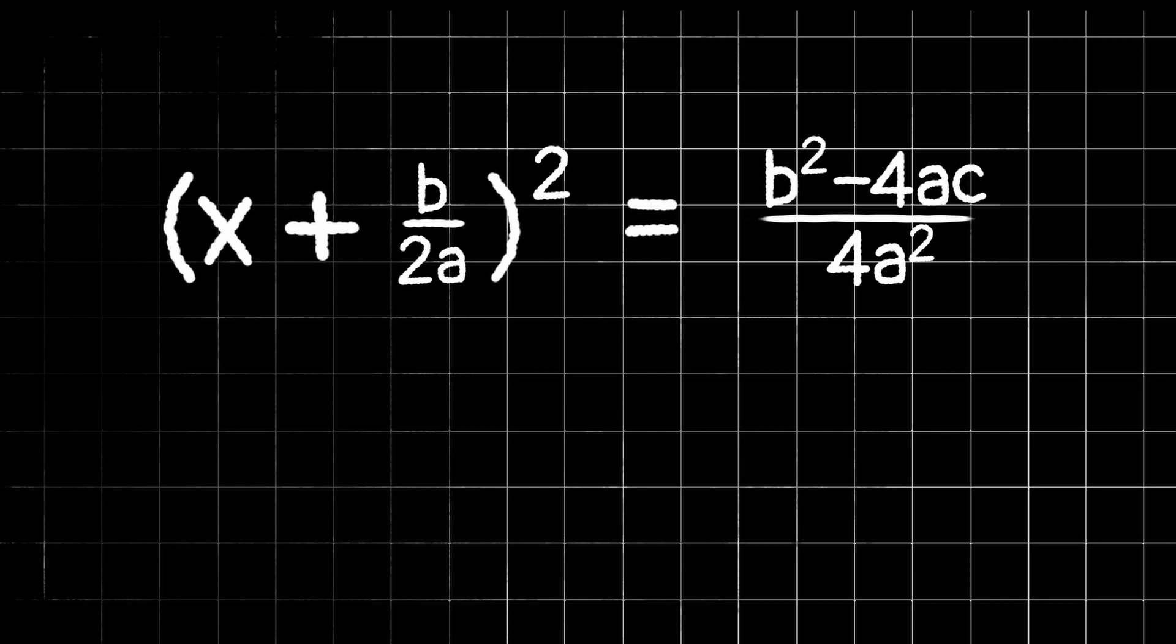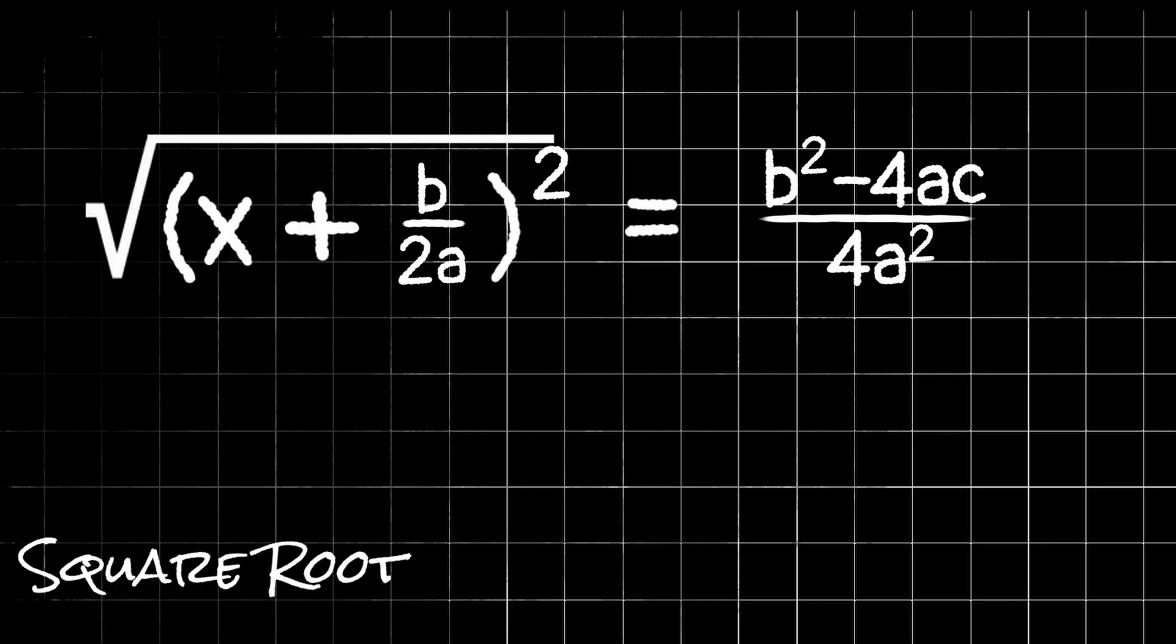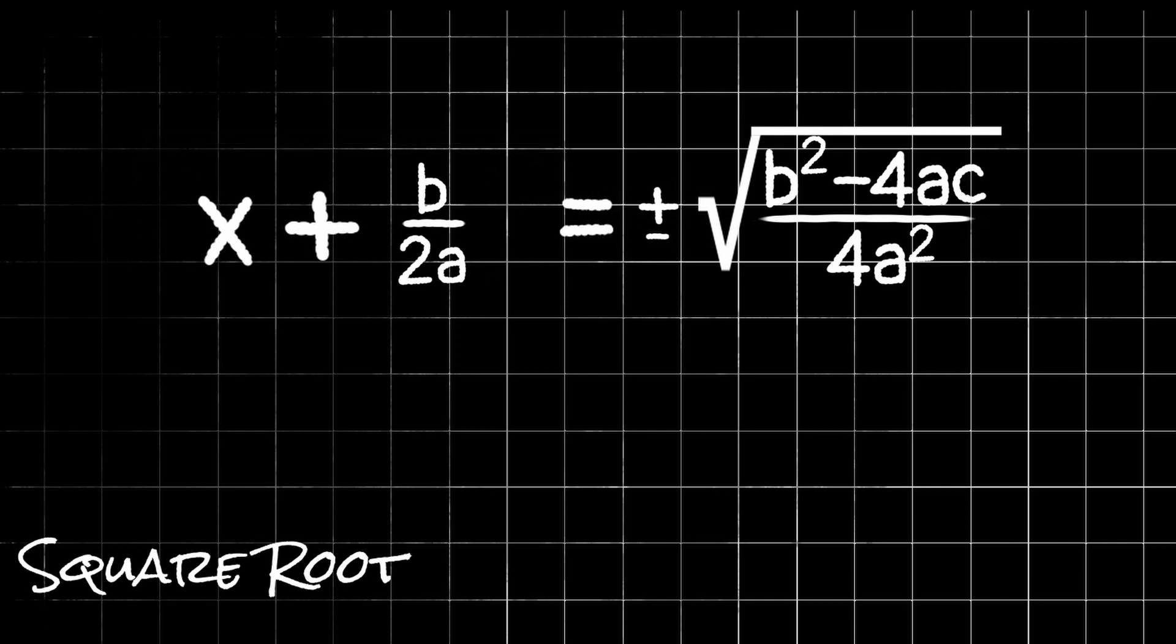Looking back on the left side, remember our goal here is to get x all by itself. So first we should probably get rid of the square and we can do that by taking the square root. And again, if we take the square root of the left side, we must take the square root of the right side. But keep in mind when taking the square root, we could have a positive answer or a negative answer. Think about 16. 4 times 4 gives us 16, but so does negative 4 times negative 4. So whenever we take the square root, we actually have plus or minus the square root. So we now have x plus b over 2a equals plus or minus the square root of b squared minus 4ac over 4a squared.